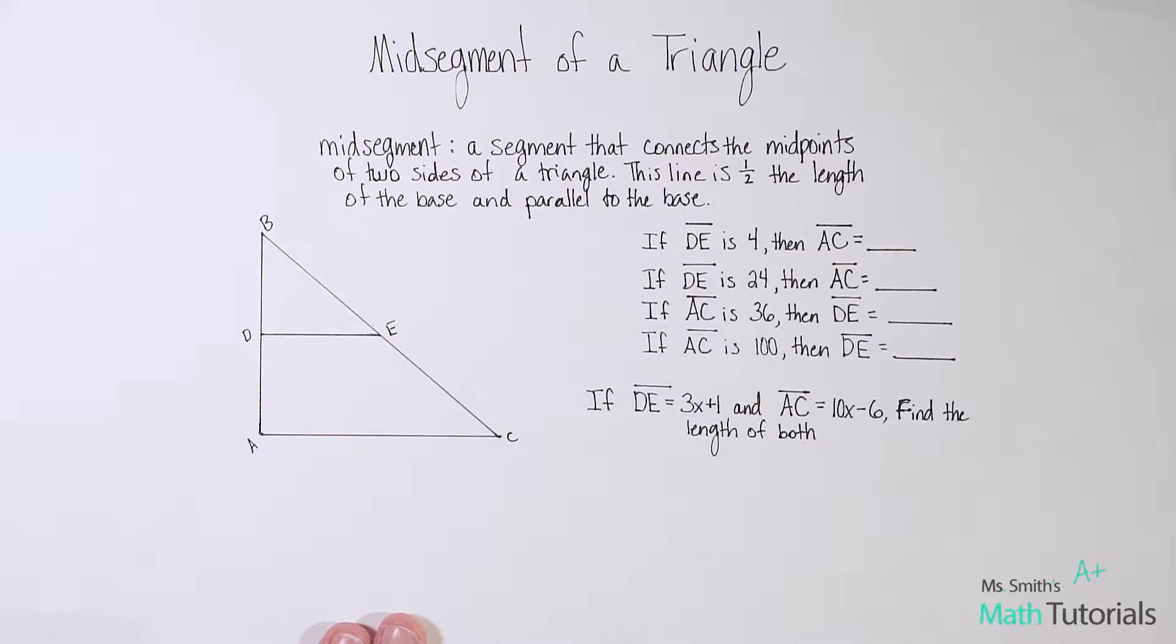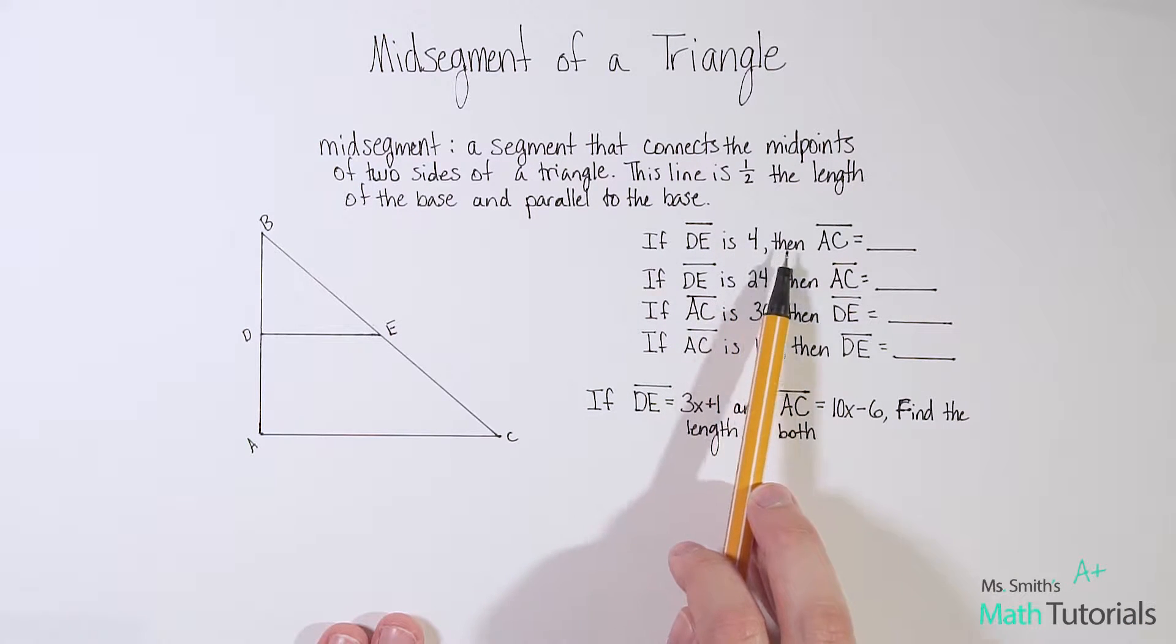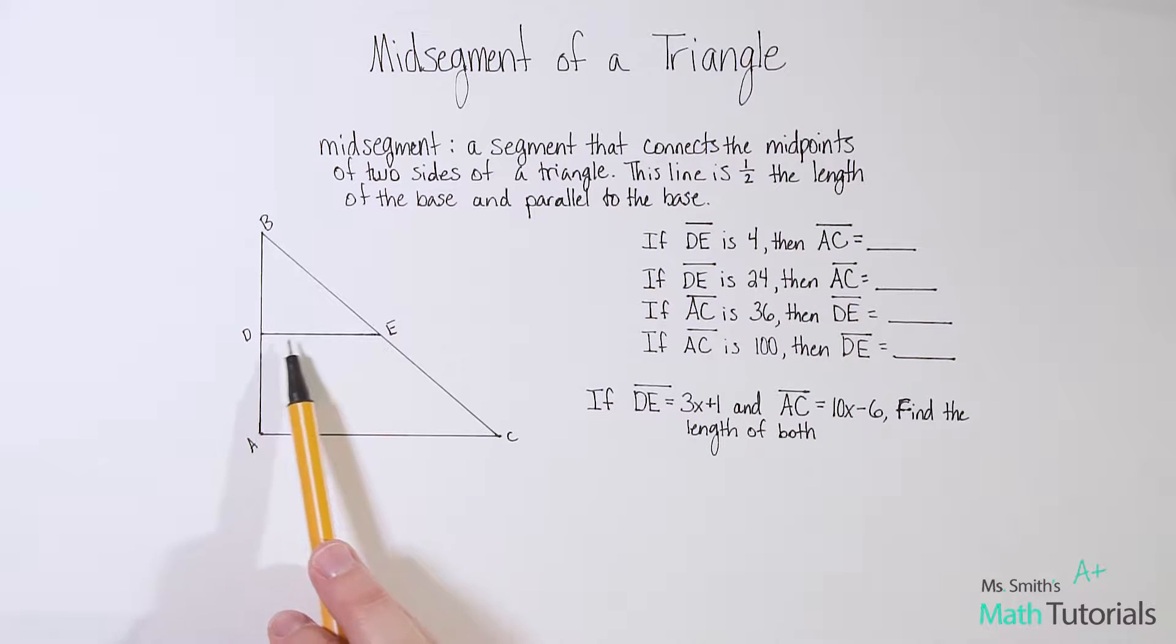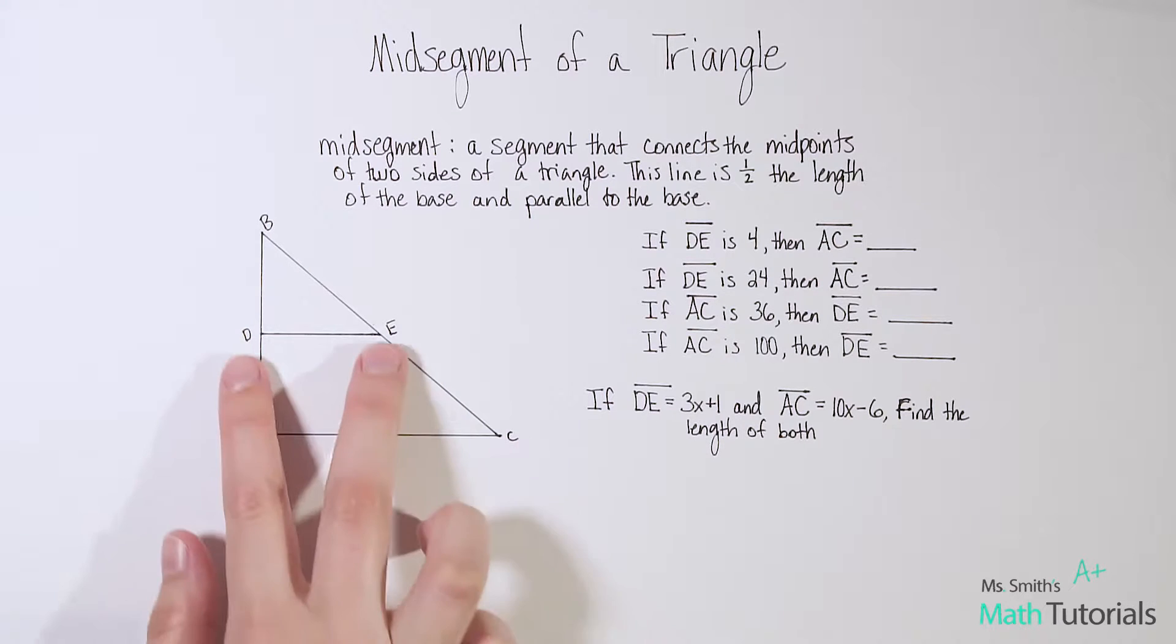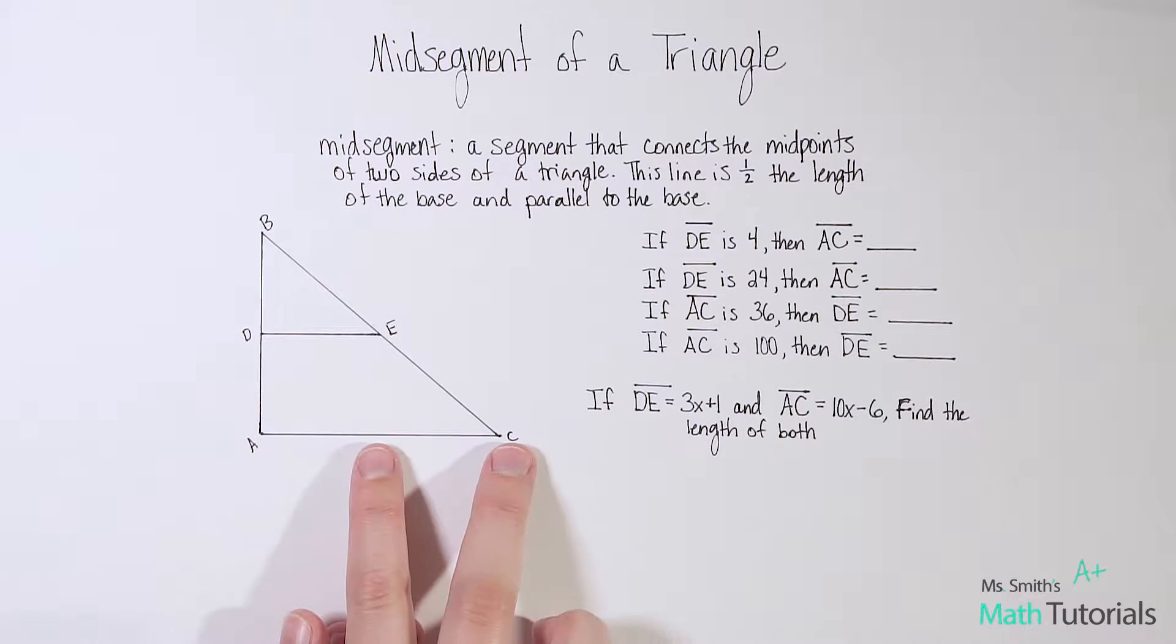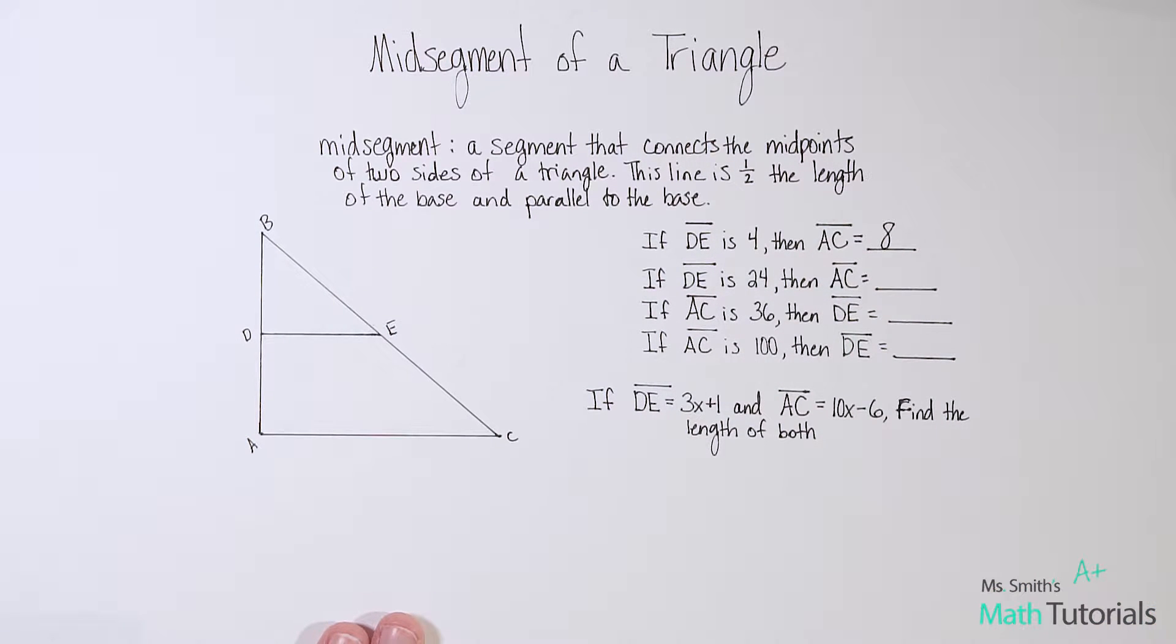So let's think about this. If DE is four, then AC would be what? So if DE, this is a mid-segment, if this length was four, then the base would be what? Well, I know that this is half of this. So what is four times two? That would be eight. So if DE was four, AC would be eight.